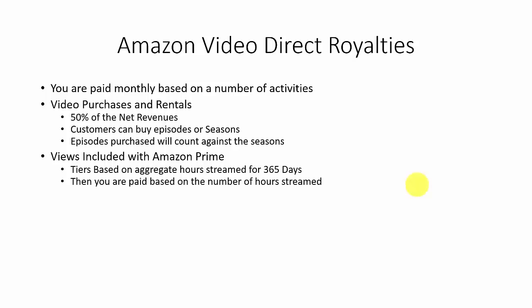Once your tier is determined, you'll be paid based on the number of hours actually streamed. The higher your tier, the higher the rate of pay. You're also going to be paid 55% of the net advertising revenue from individuals who've chosen to watch videos free but with ads associated with them.